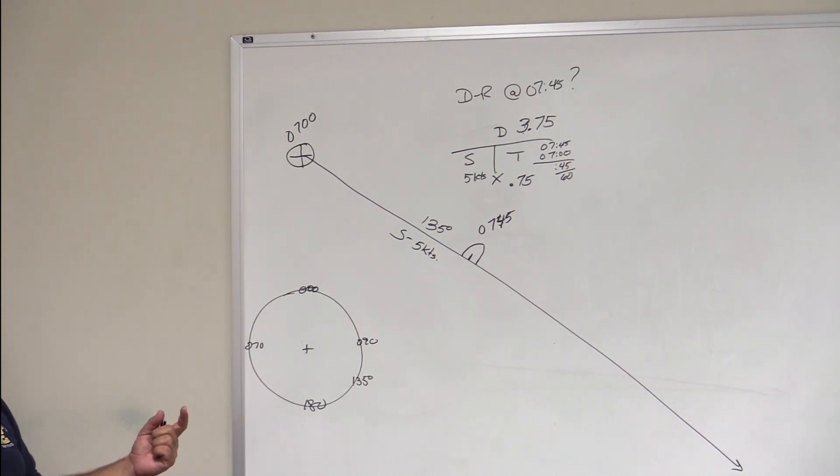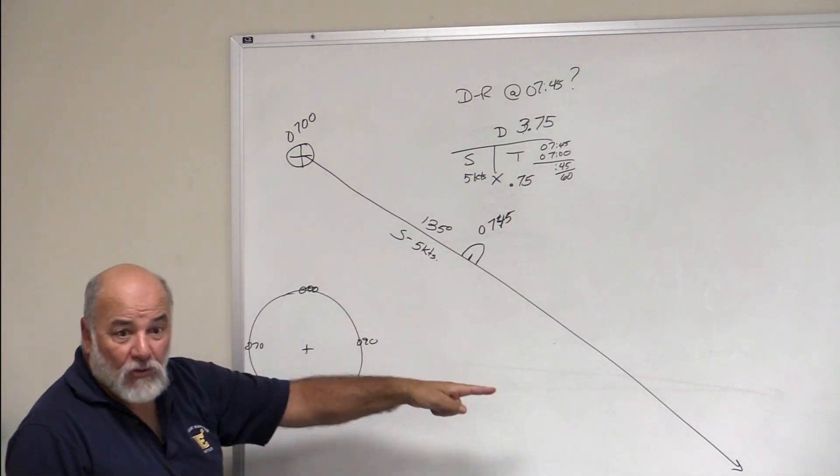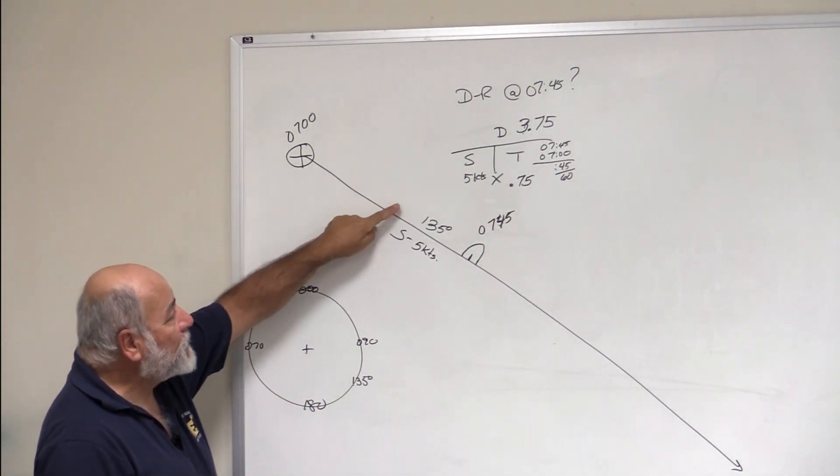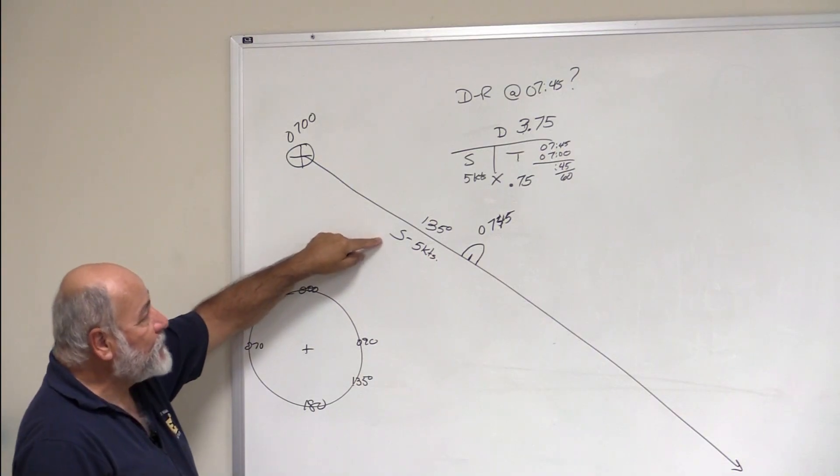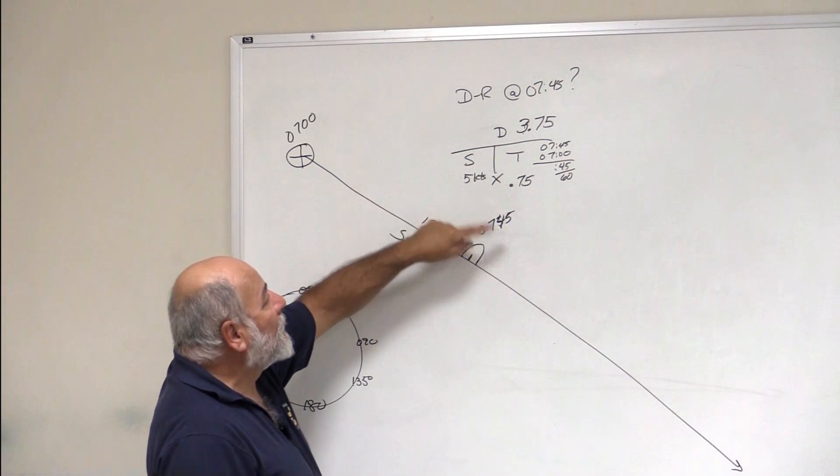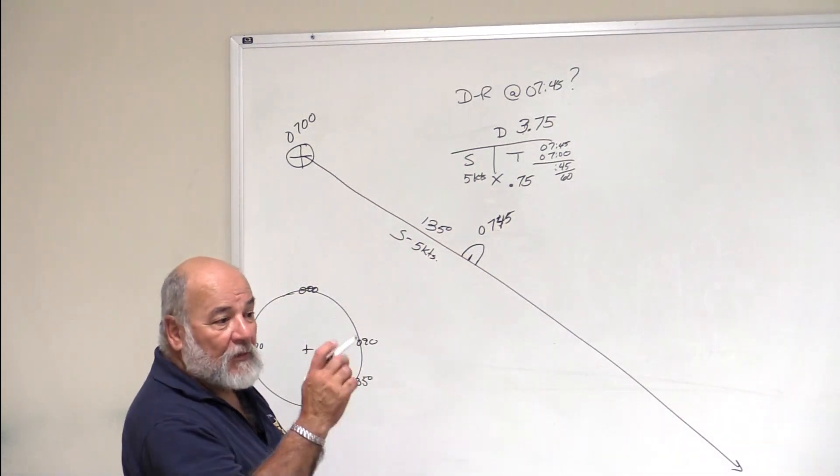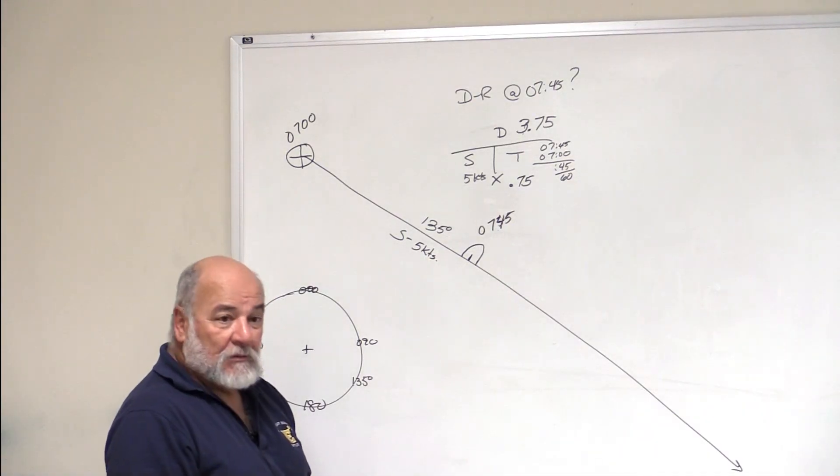That's a DR. That's all it is. Okay, fixed position, draw the course, label the course, label the speed, do your distance-speed-time problem, come up with a distance, measure it off, put it on your track line, and that's what your DR is. Okay, perfect.